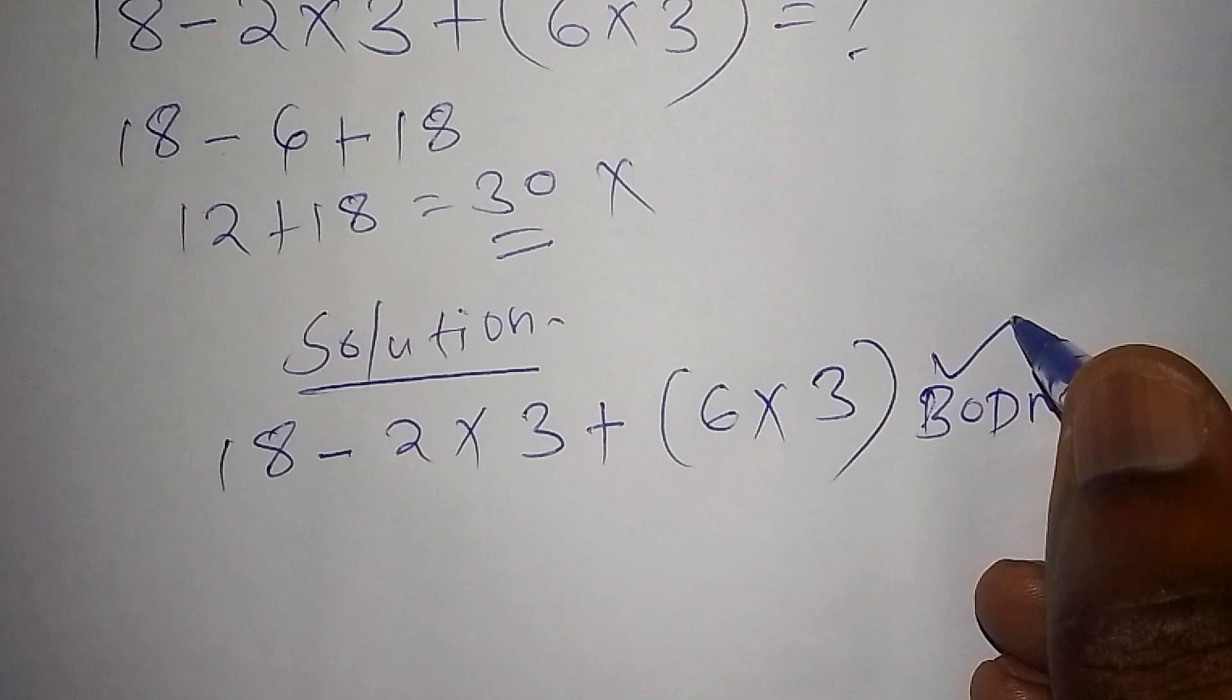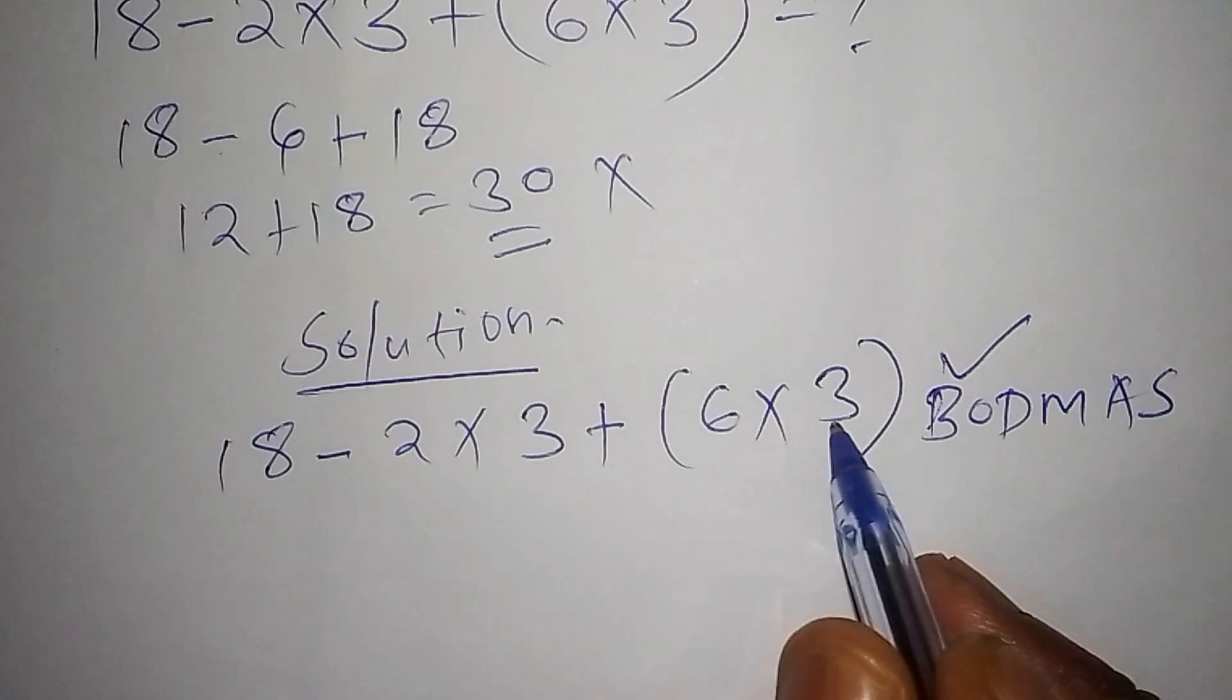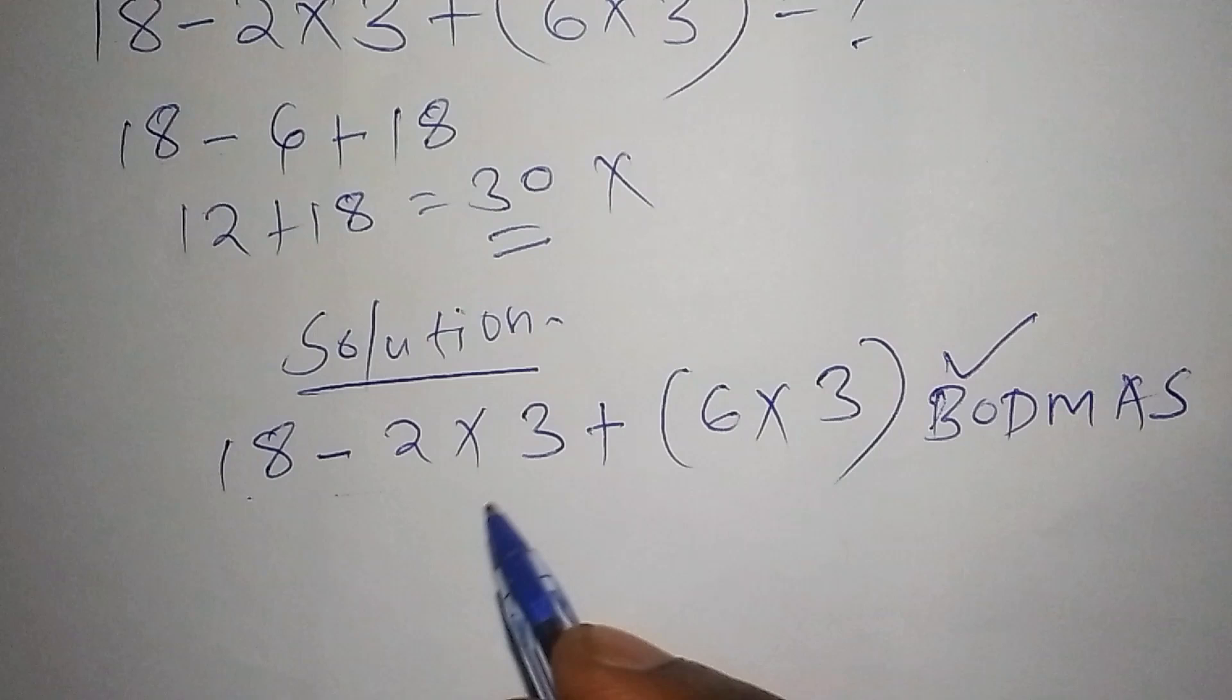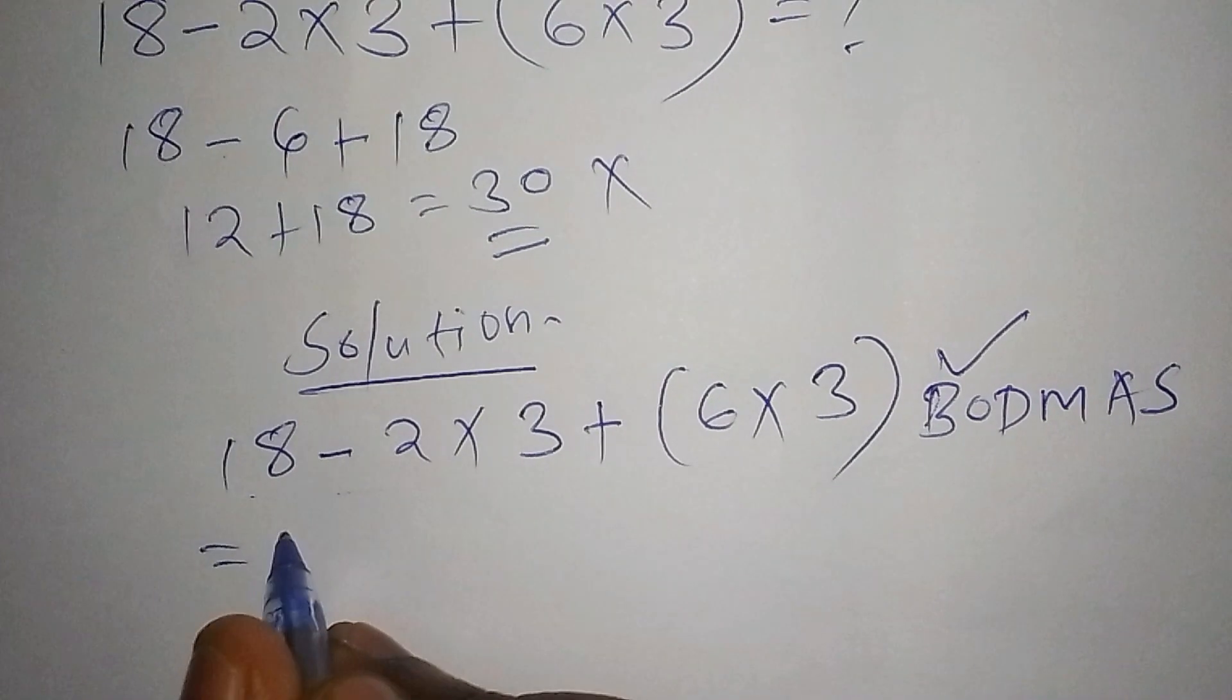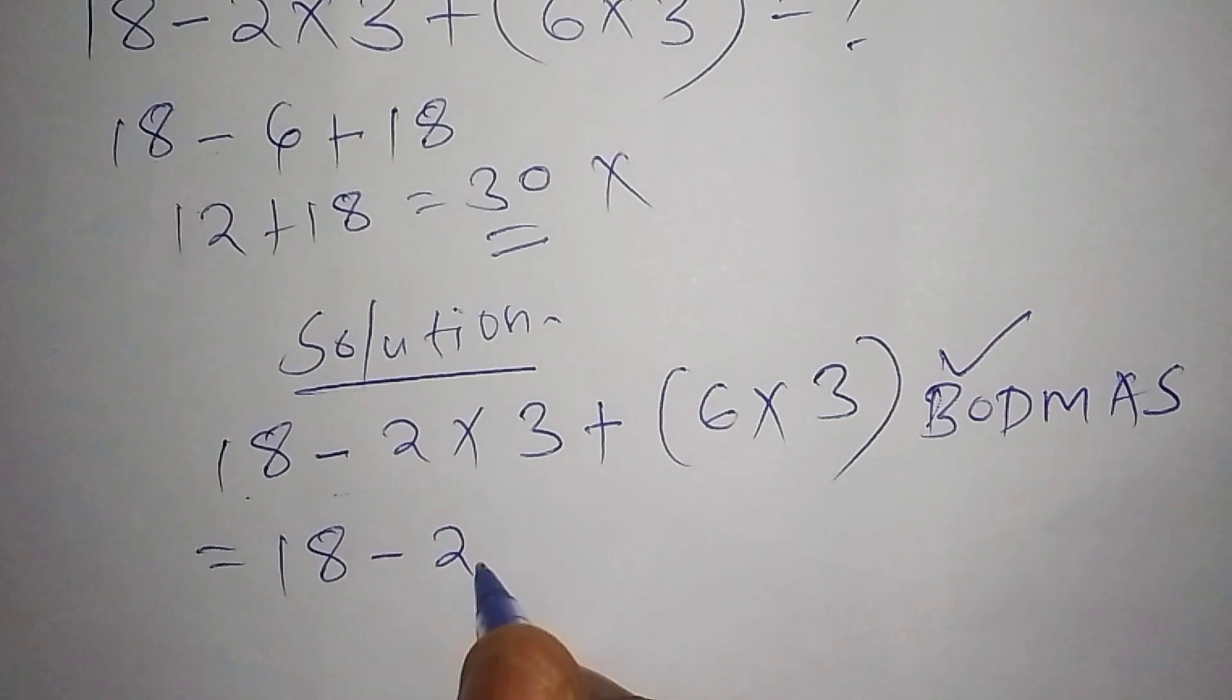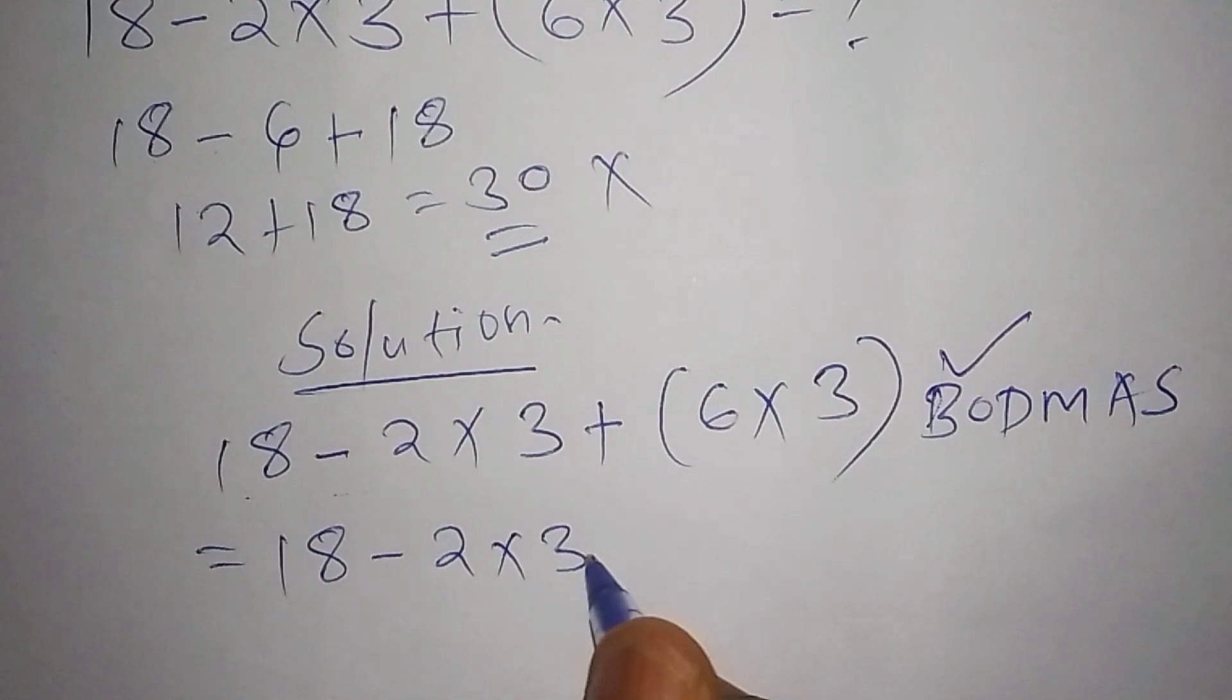B stands for brackets, so I'm supposed to work out this one first, but not this mathematical part. So here I shall say this equals 18, then 18 minus 2 multiply by 3, plus, then 6 multiply by 3 is 18.